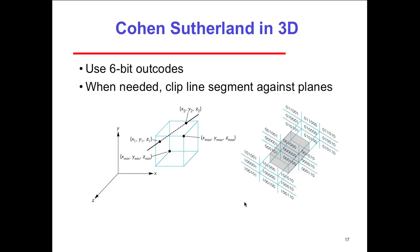In 3D, we use a six-bit out code. Applying the 2D model to 3D: we clip line segments against planes. Here's an example of how planes work in 3D mode — instead of four zones we use six, to get six calculations for the out codes.